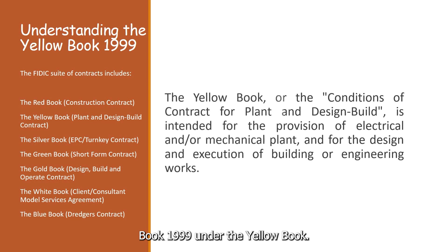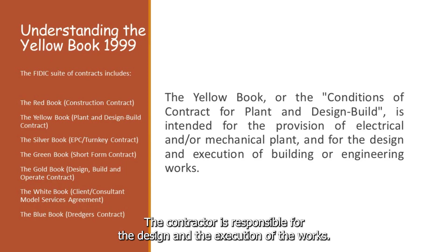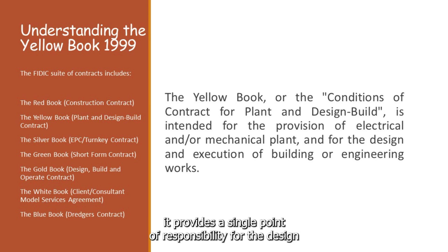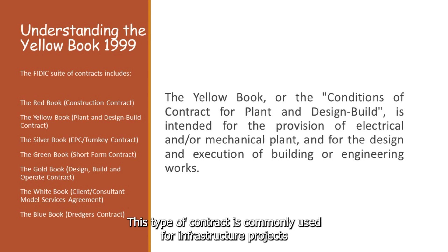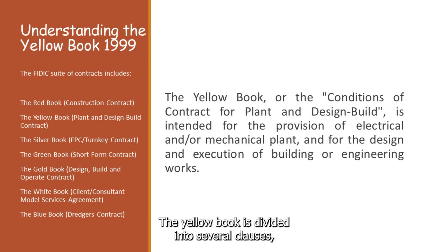Let's begin with understanding the Yellow Book 1999. Under the Yellow Book, the contractor is responsible for the design and the execution of the works — it provides a single point of responsibility for the design and construction of the project. This type of contract is commonly used for infrastructure projects where the contractor takes on more risk than under the Red Book. The Yellow Book is divided into several clauses, each dealing with a specific aspect of the contract.